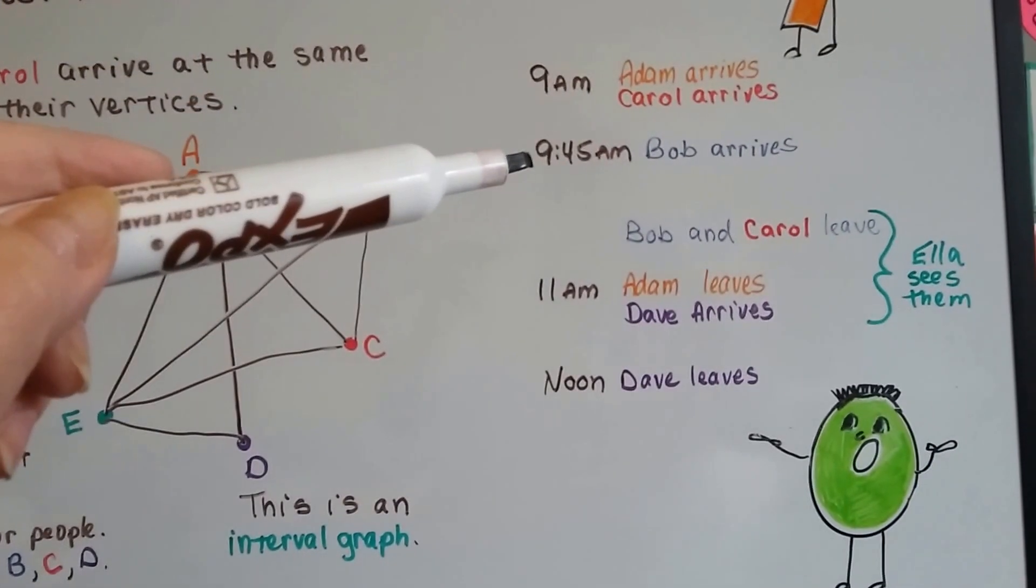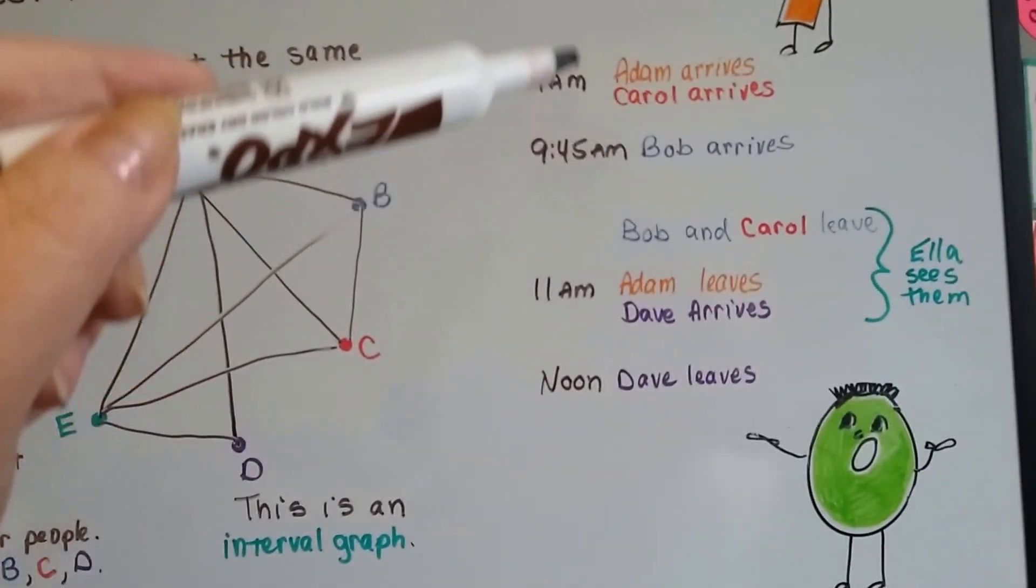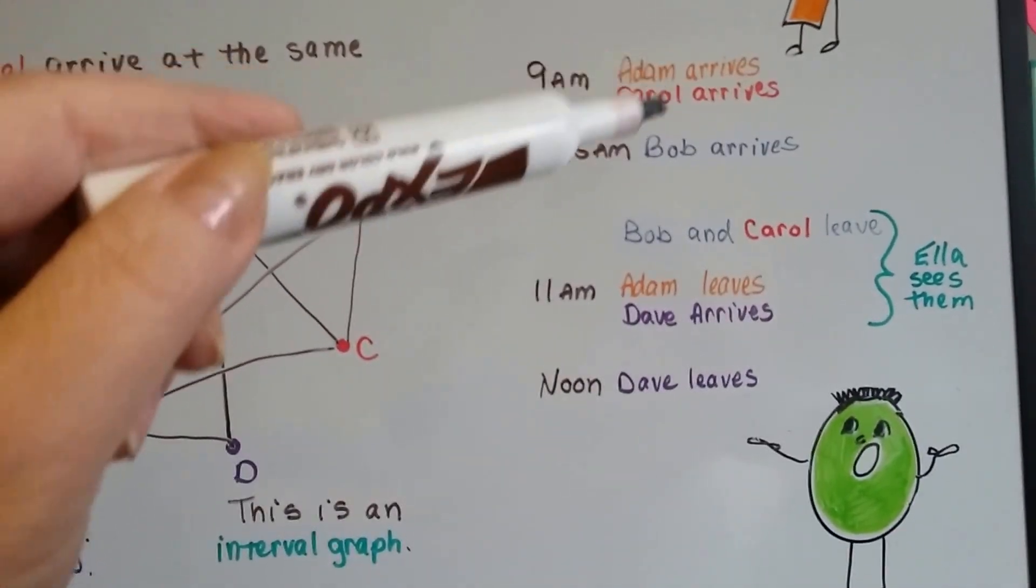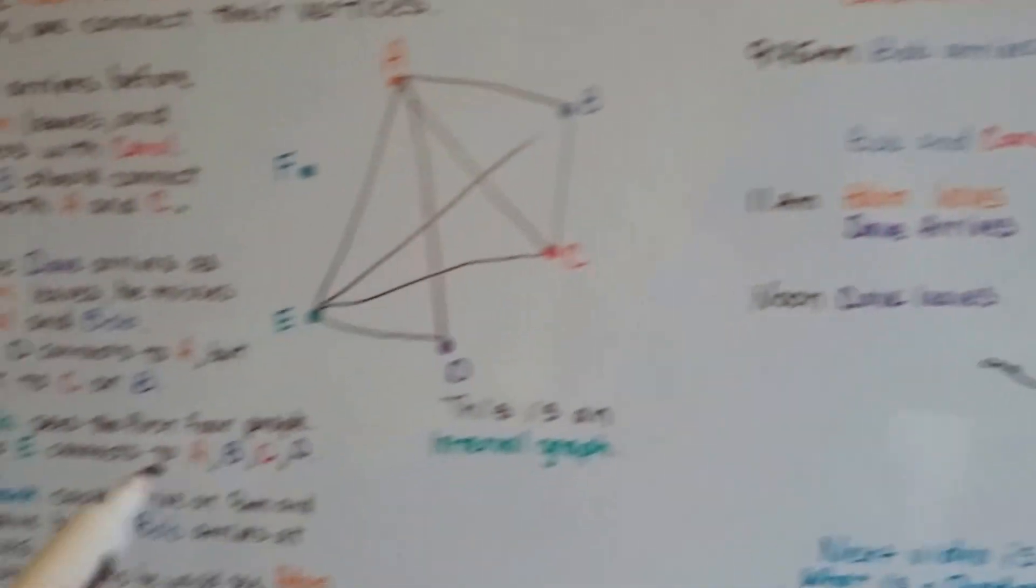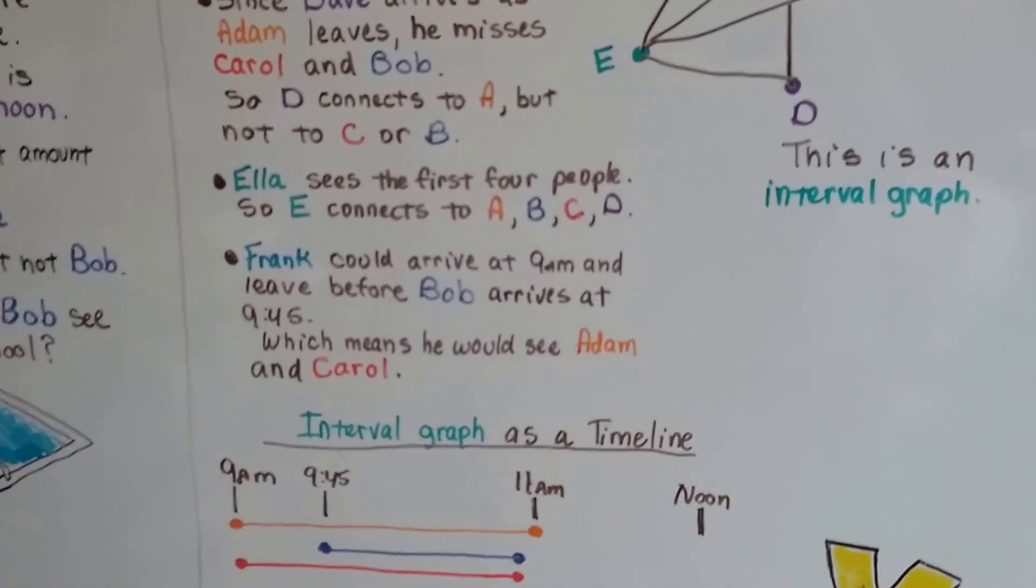Bob didn't arrive until 9:45 a.m. That means Frank had to have come and gone in this tiny little period before Bob even showed up. Frank could arrive at 9 a.m. and leave before Bob arrives at 9:45.